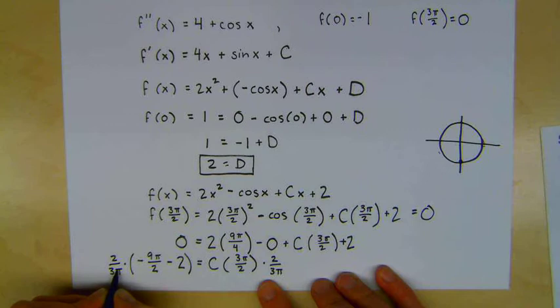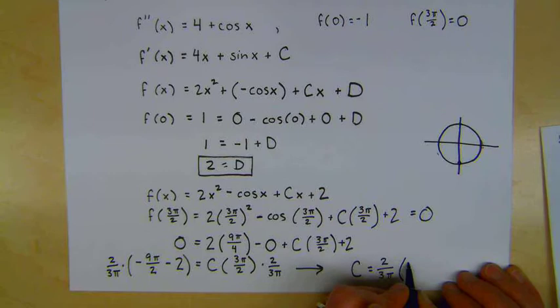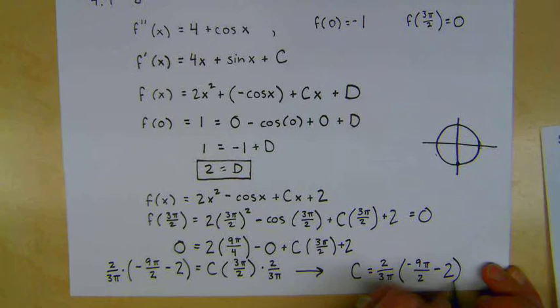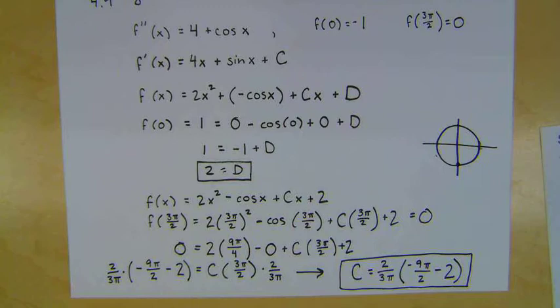If you had a calculator, then you could plug it in, and it would tell you that c was exactly equal to 2 divided by 3π times negative 9π/2 minus 2. That looks sort of horrible. I don't know. And that's just specific to this problem. If you had different constants, you would have different numbers anyway.